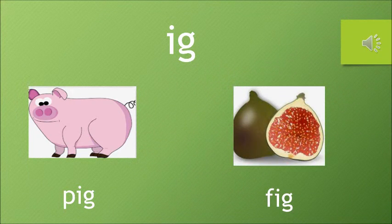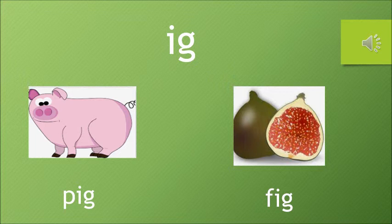So the next I word we are going to do is Ig. The sound of I is E, sound of G is G. And the words are Pig and Fig. Pig is a type of an animal and fig is a type of a fruit.